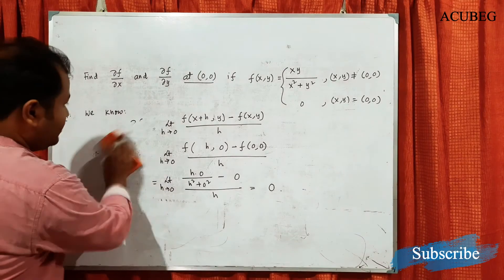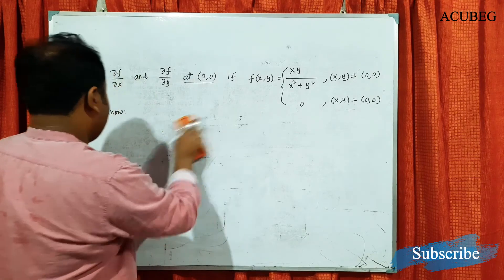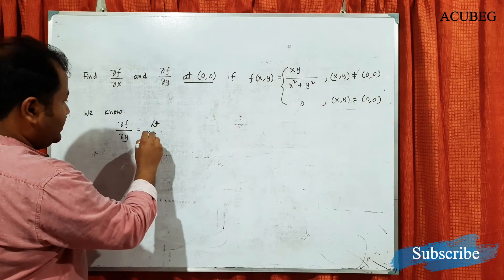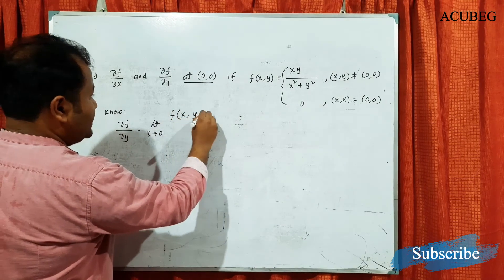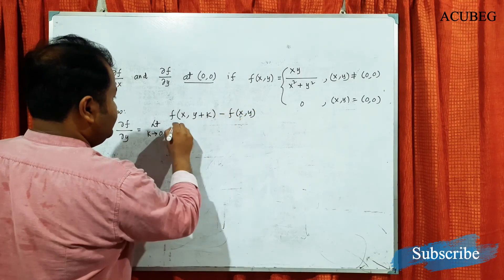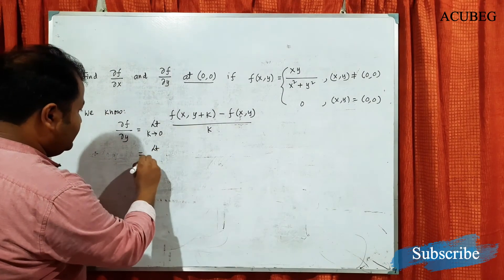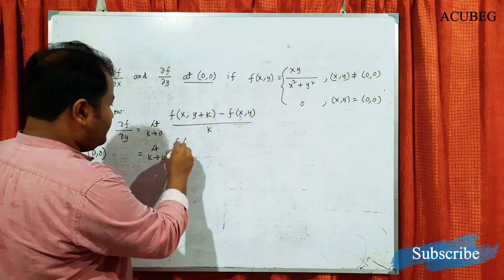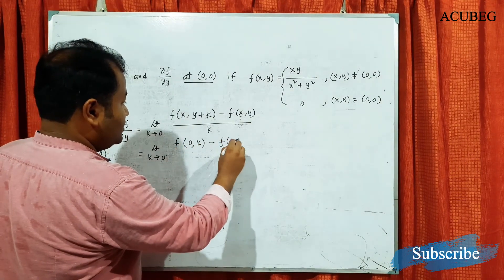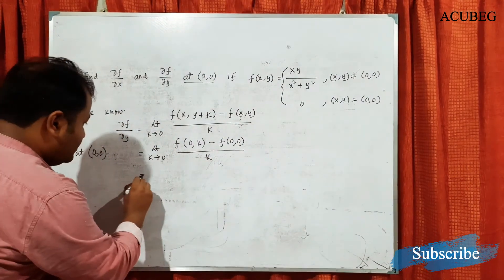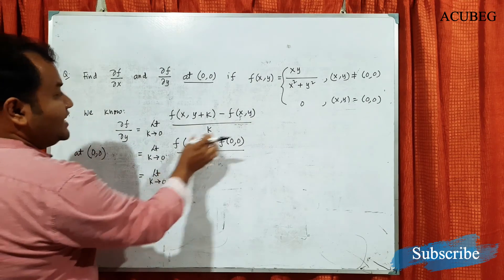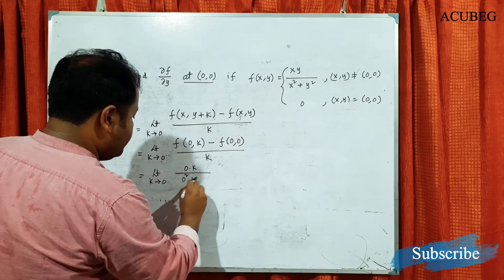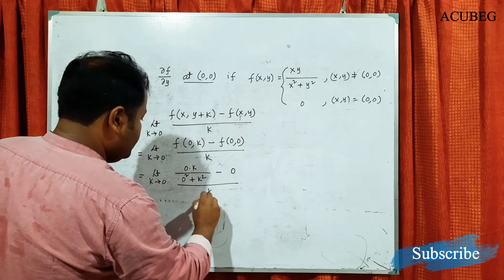For del f / del y at (0, 0): this is limit k tends to 0 of [f(0, k) minus f(0, 0)] / k. f(0, k) follows the first rule because one coordinate is 0 and another is non-zero, giving 0·k / (0² + k²) = 0. So the limit is 0, and del f / del y at (0, 0) also equals 0.